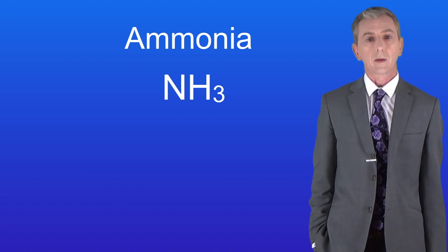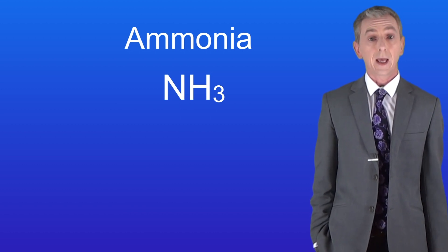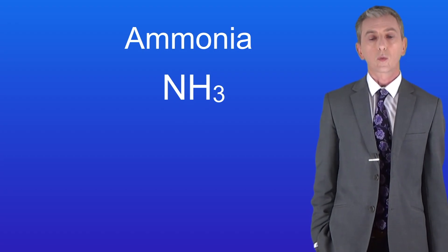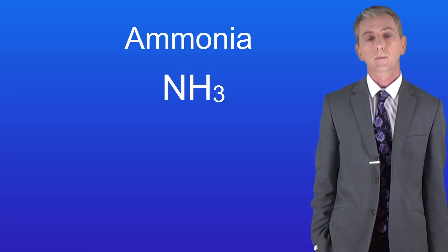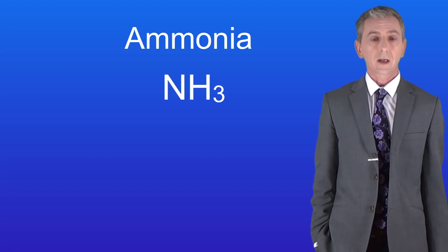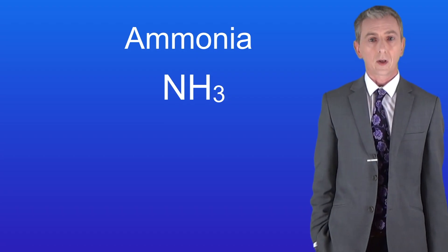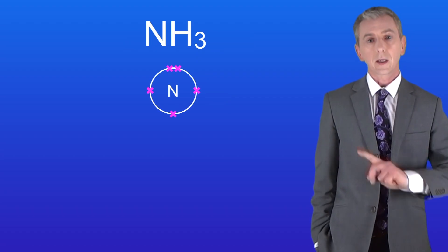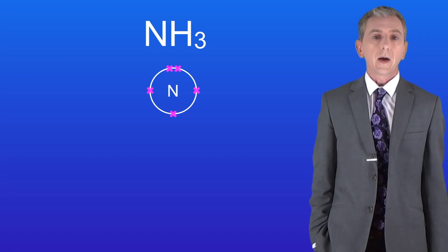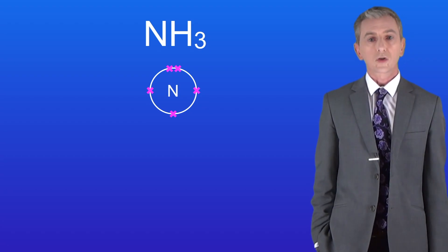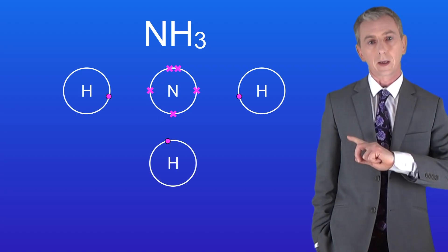The next small covalent molecule is called ammonia, and that has the formula NH₃. This tells us that ammonia has one atom of nitrogen bonded to three atoms of hydrogen. Nitrogen has got seven electrons in total, so it's got five electrons in its outer energy level. As we've seen, hydrogen atoms only have one electron, and I'm showing the three hydrogen atoms here.